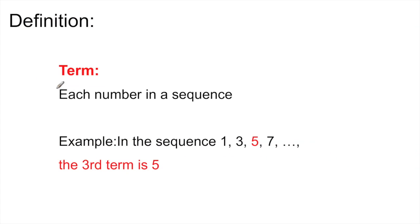Definition for term: each number in a sequence is a term. For example, in the sequence 1, 3, 5, and 7, what's the third term? The third term here is 5.